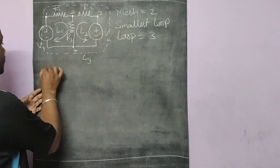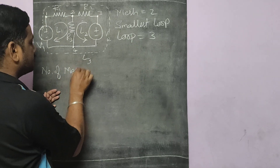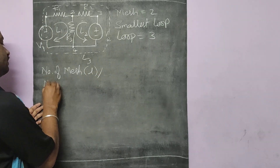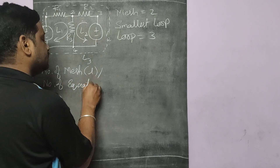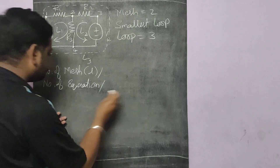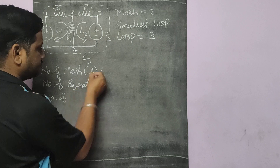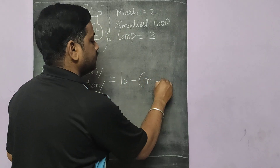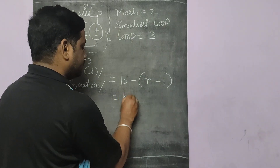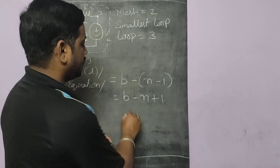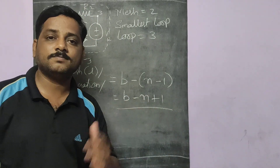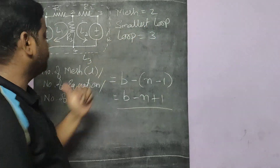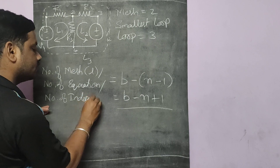Now I'll give you a formula to find the number of meshes — also called the number of independent loops or number of equations in mesh analysis. The formula is: B minus (N minus 1), which simplifies to B minus N plus 1, where B is the number of branches and N is the number of nodes. This expression gives you the number of independent loops.